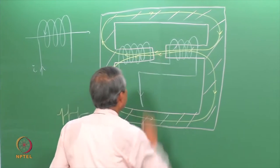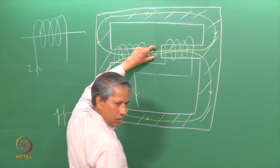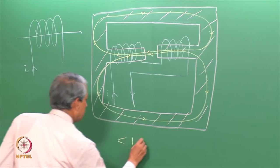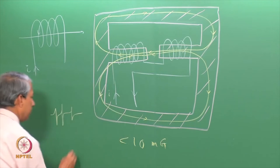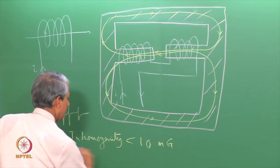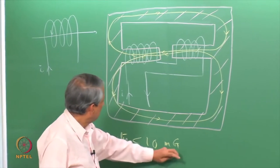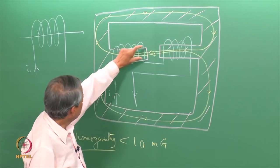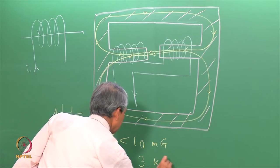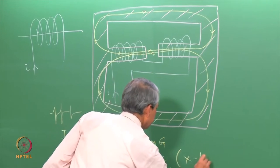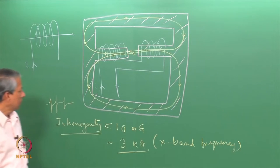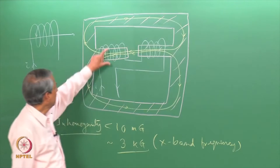A typical requirement is that this inhomogeneity within the sample, within the cavity dimension, the inhomogeneity should be less than 10 milligauss. This is the inhomogeneity necessary in the presence of a magnetic field which is of the order of 3 kilogauss which is our X band frequency, which is the typical requirement of the homogeneity of the magnetic field.